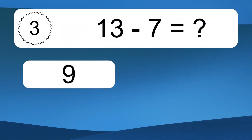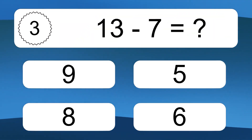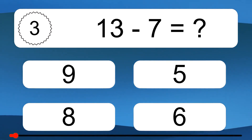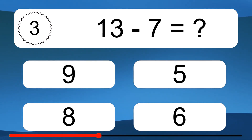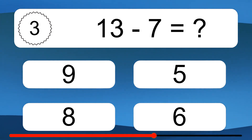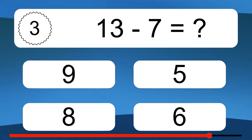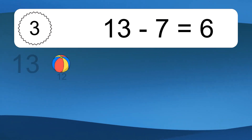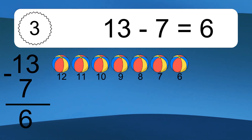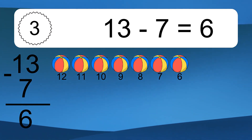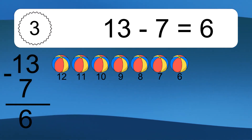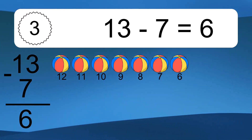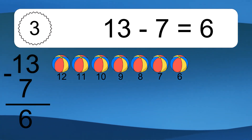13 minus 7 equals what? 13 minus 7 equals 6. Let's count it: 12, 11, 10, 9, 8, 7, 6.